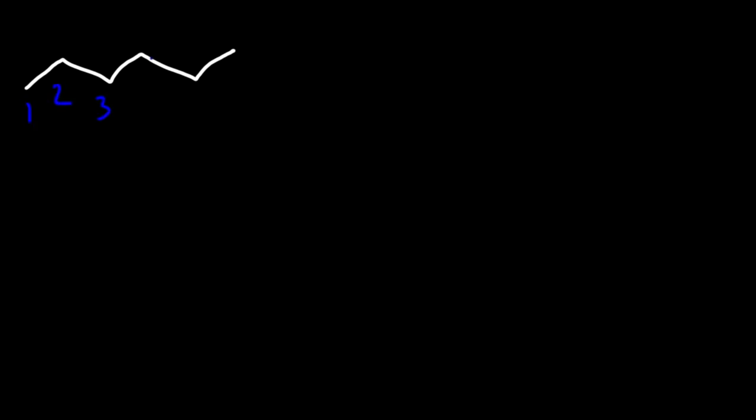In this video, we're going to focus on naming organic compounds, particularly alkanes. So let's start with a simple example. How can we name this alkane? We need to identify the number of carbons in the parent chain. And because it has six carbons, this is called hexane.